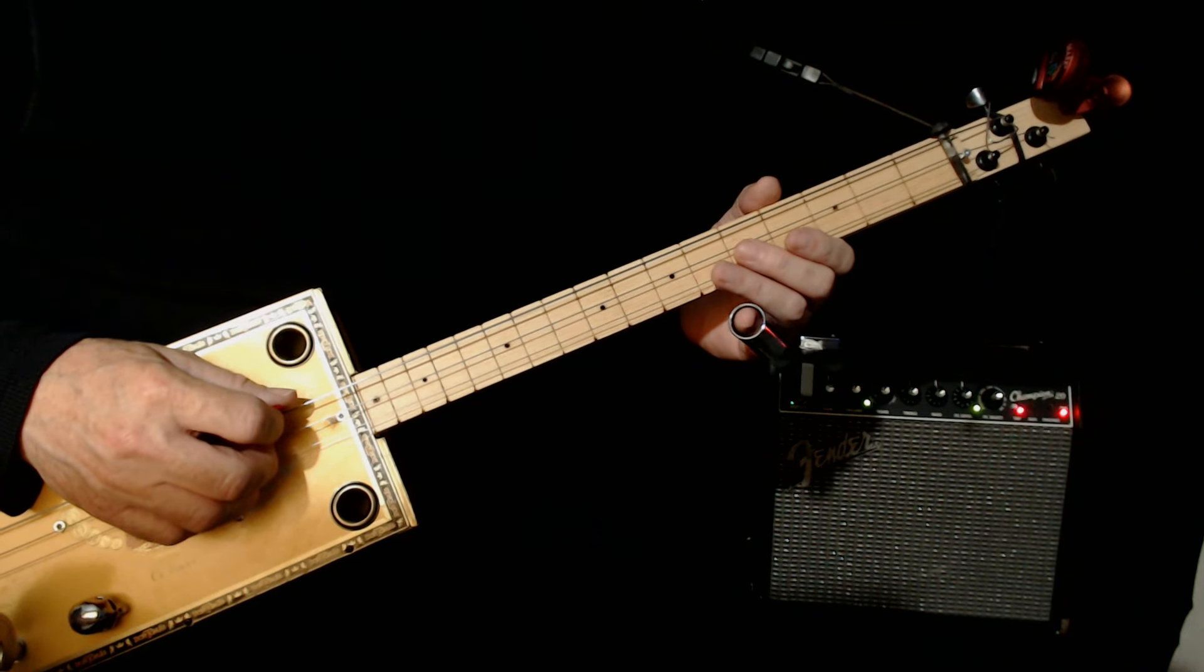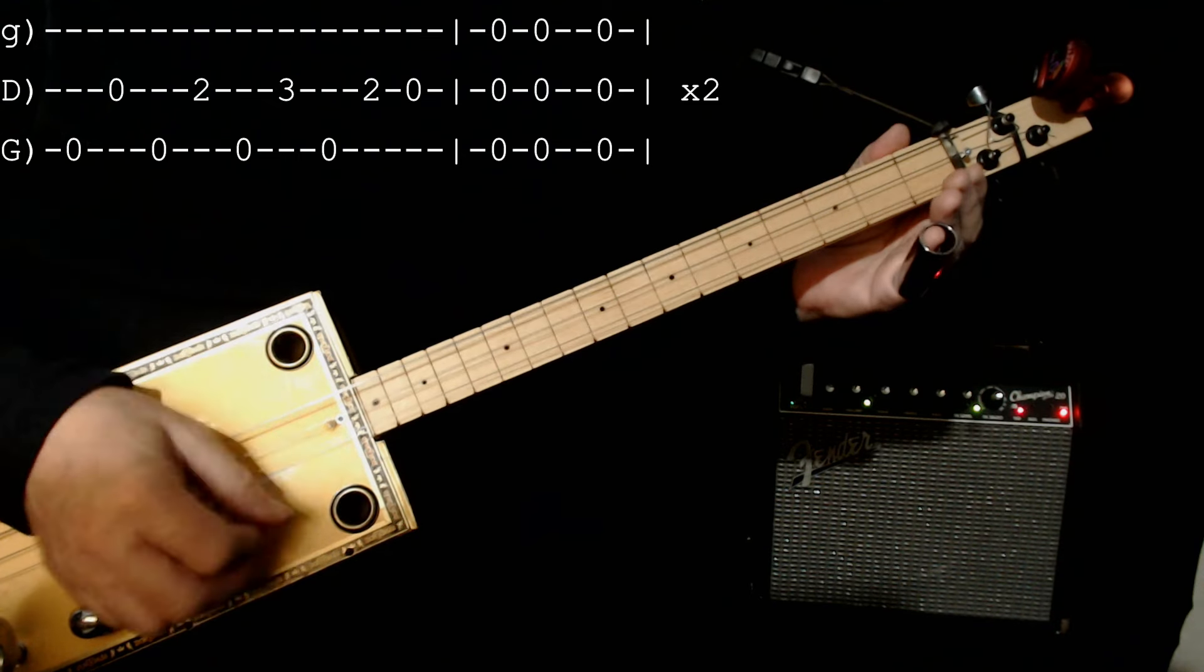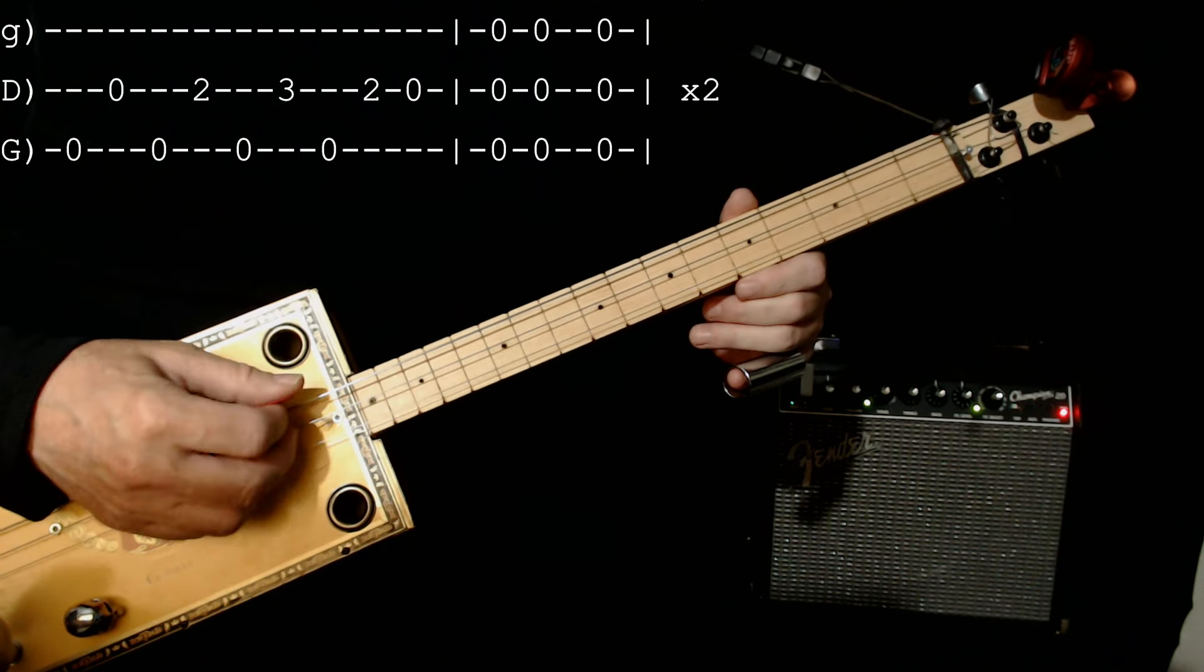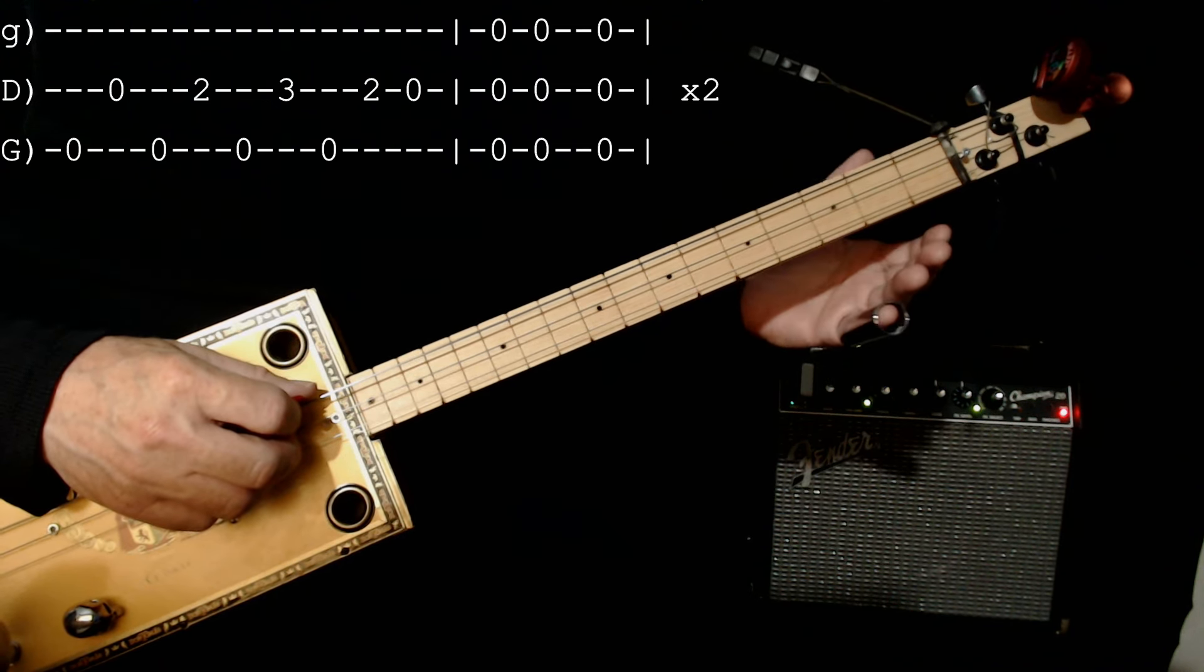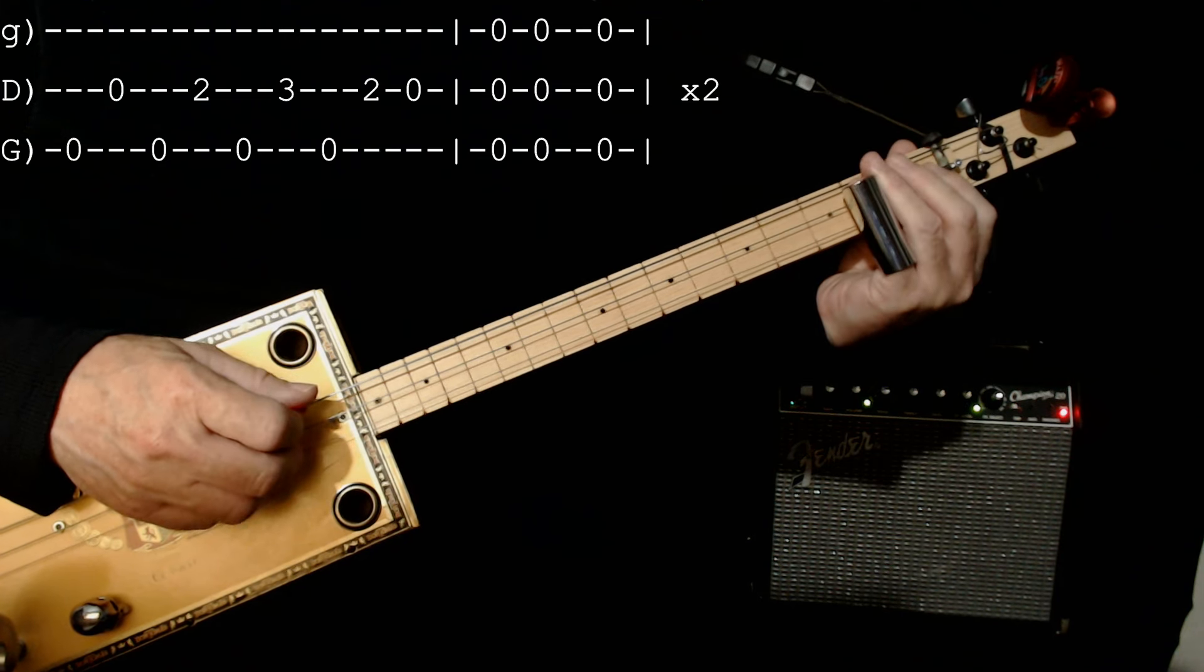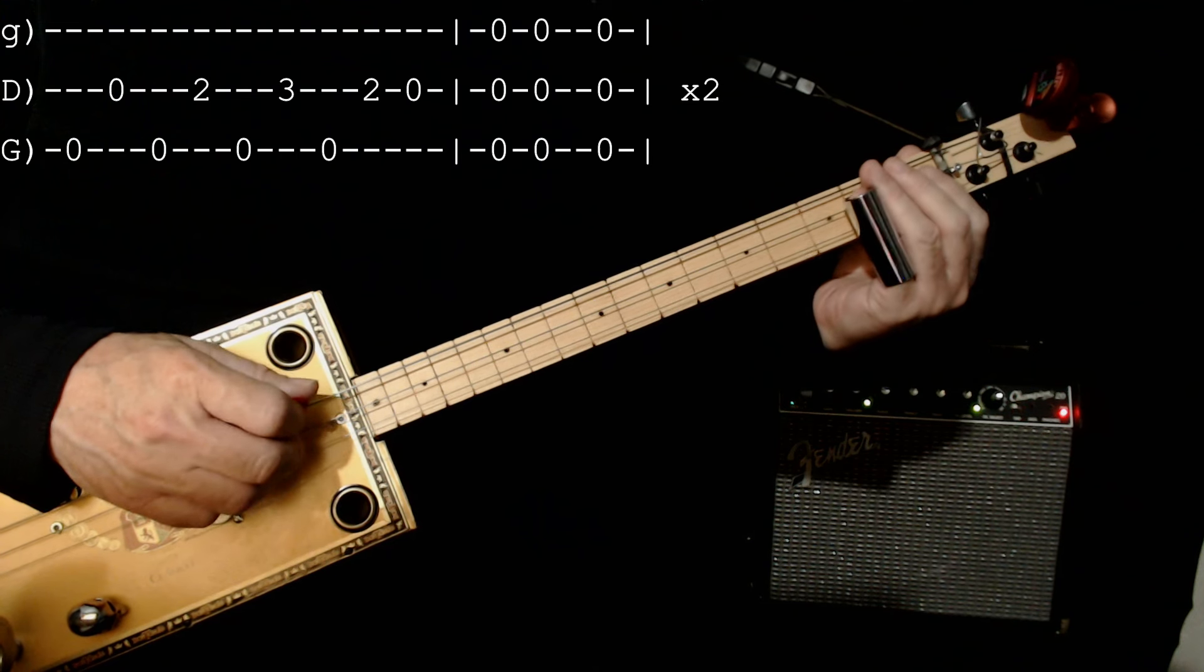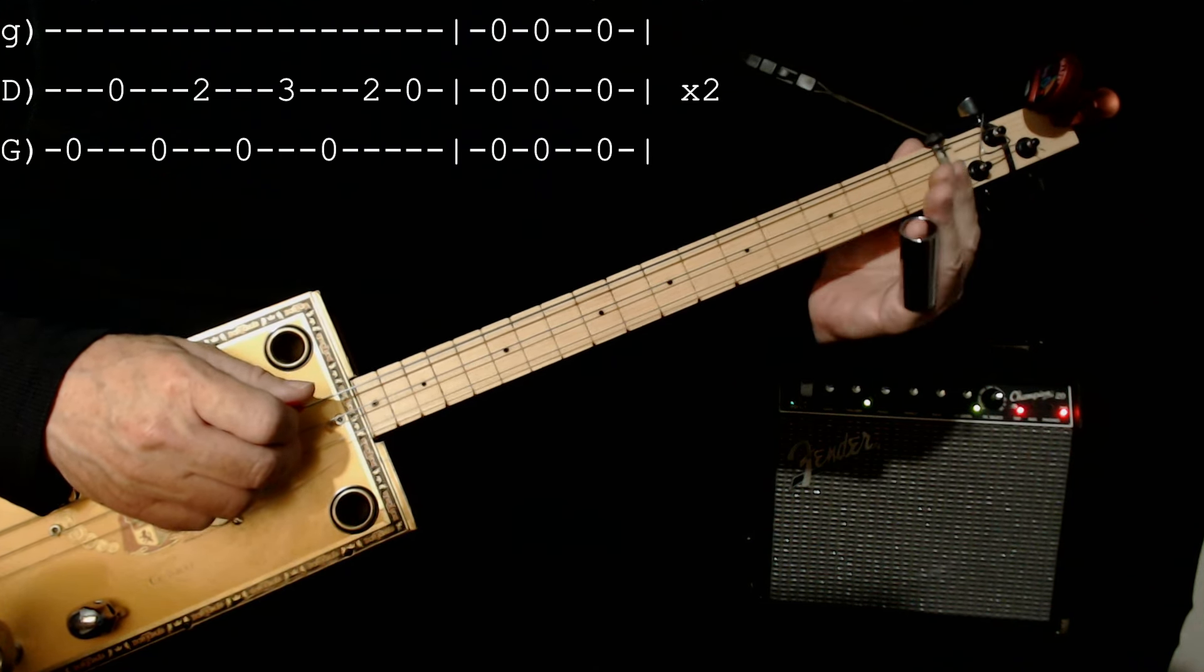The first lick, I'll play it for you and then I'll explain it. So what that is, is the low string then the middle string. Zero on the low string, then two on the middle, zero on the low string, three on the middle, zero on the low string, two, and then it goes to zero on the middle string.